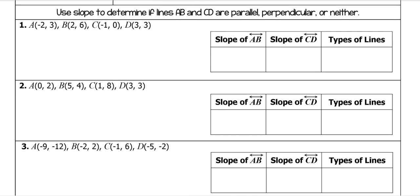Use slopes to determine if AB and CD are parallel, perpendicular, or neither. For the slope of AB, we subtract our y's on top: three minus six. And our x's on bottom: negative two minus two. Three minus six is negative three, and negative two minus two is negative four, which gives a positive three-fourths. So the slope of AB is three-fourths.